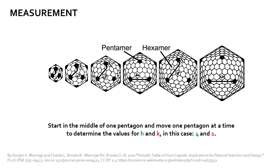Using this simple example, we start in the middle of one pentagon and advance in one direction: 1, 2, 3, 4, and then towards the next closest pentagon we advance 1 in the other direction. That gives us an H of 4 and a K of 1.